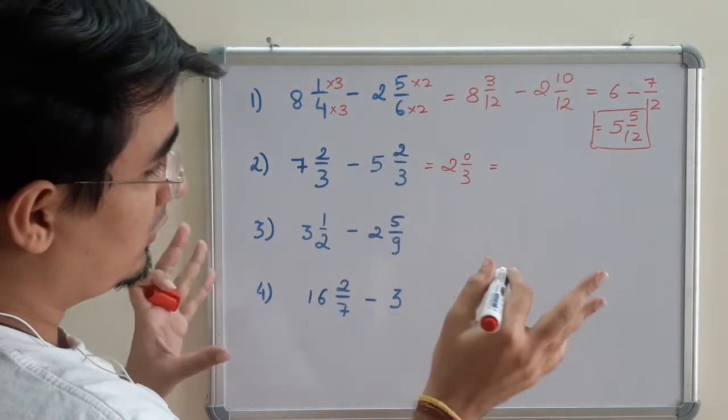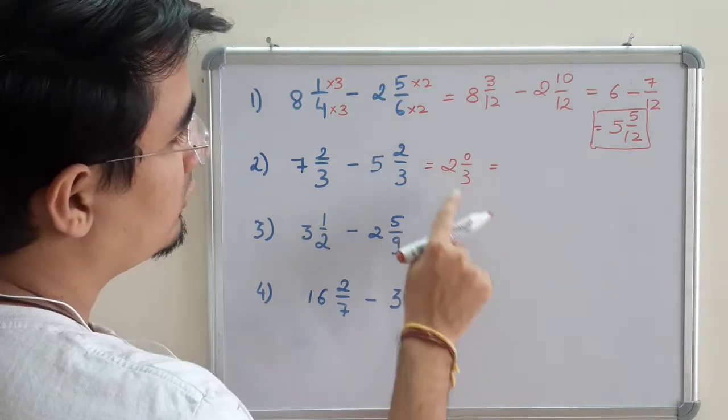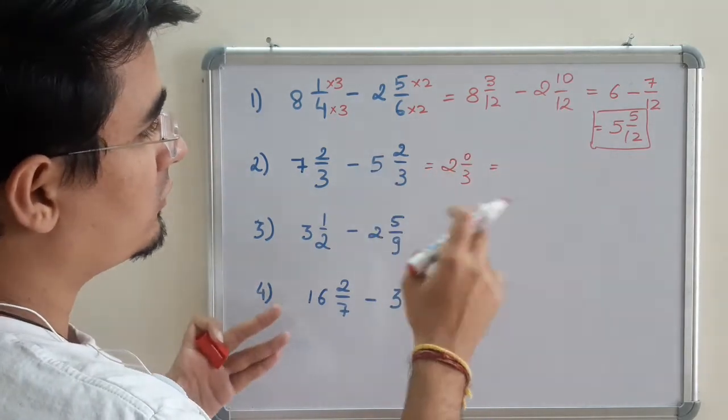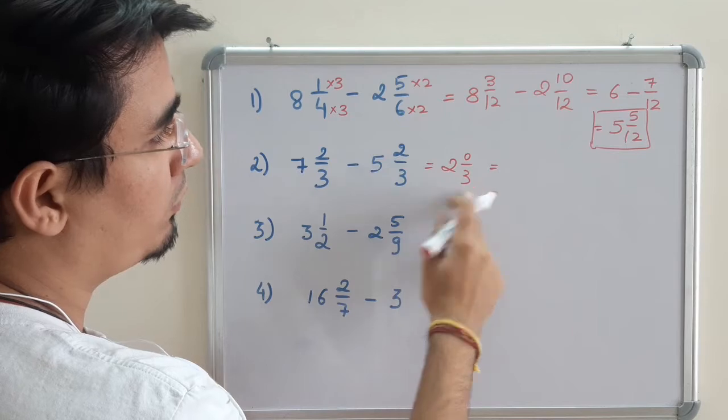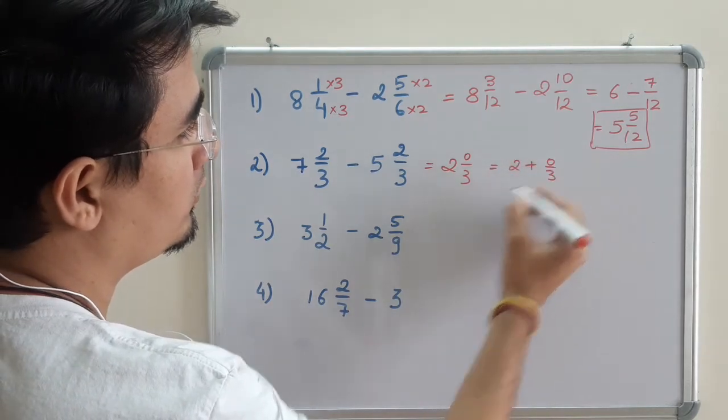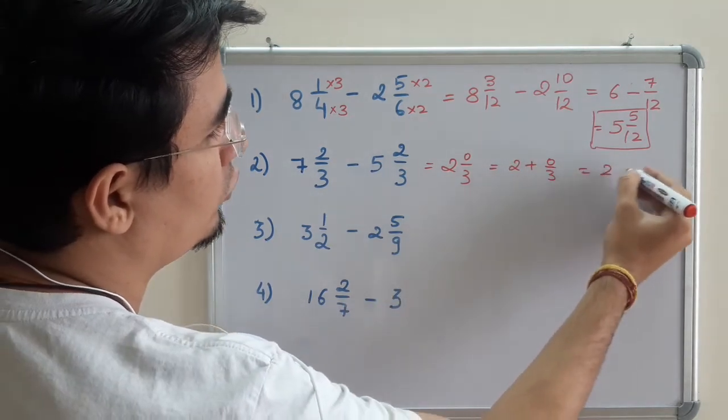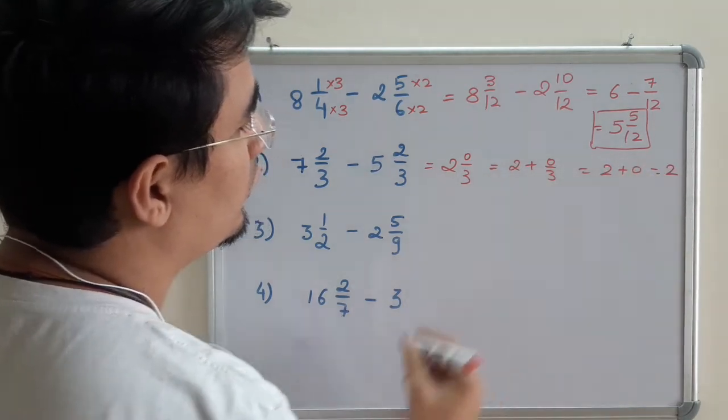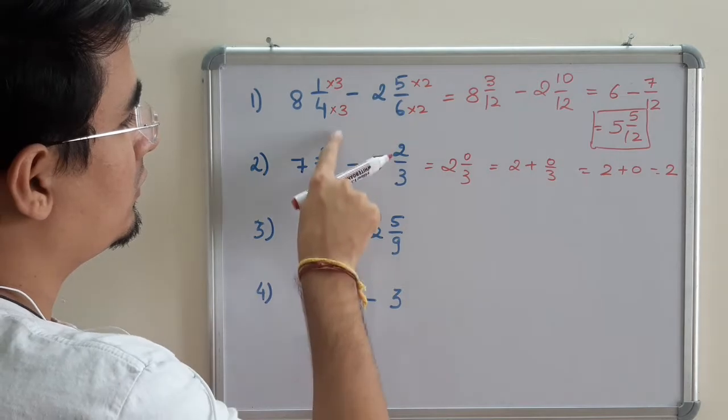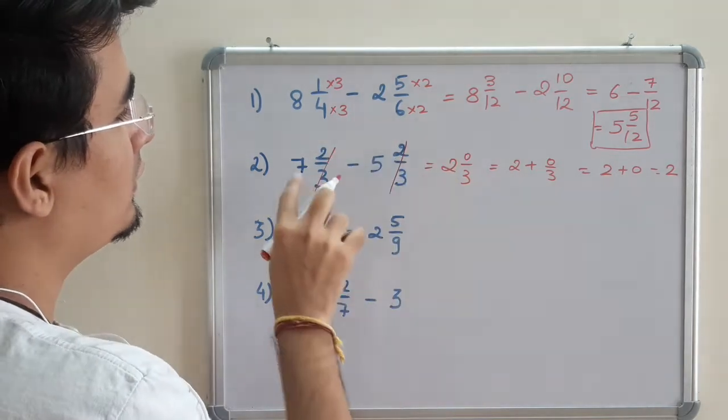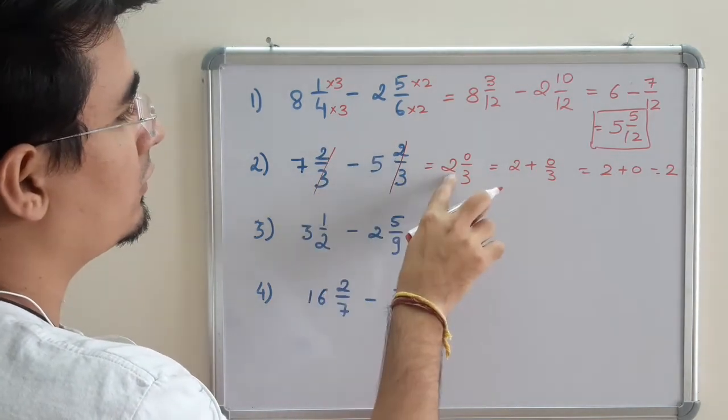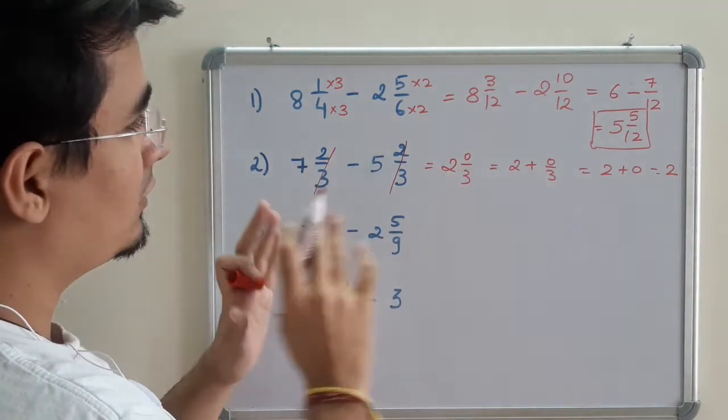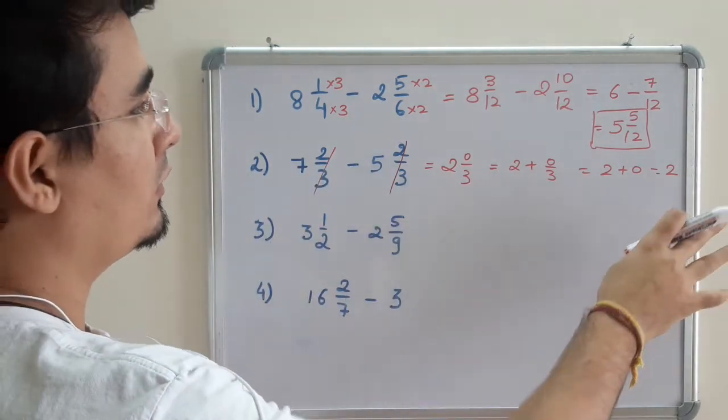So many students will write 0 as the answer, but no. Try to understand what a whole mixed fraction is - that is whole plus proper. So whole plus proper. So it is 2 plus 0, which is 2. So for my understanding, it's 2/3, 2/3 get cancelled. 7 minus 5 is 2, so the answer is 2.